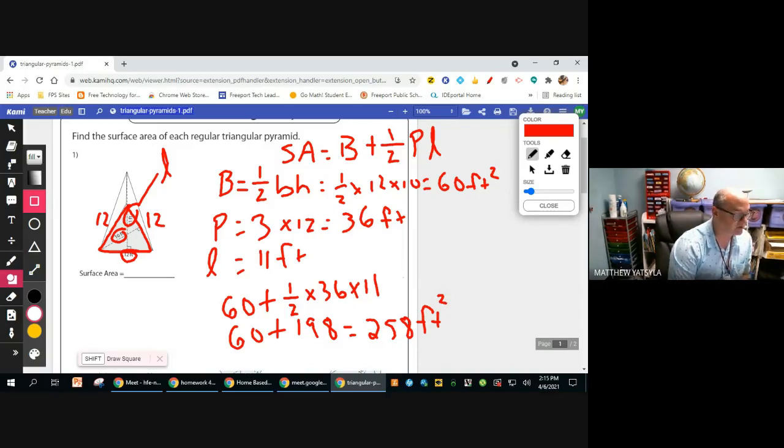So again, the only difference between a square and a triangular pyramid is how we're going to find the perimeter, multiplying it by three instead of four, and how we're going to do our base. So instead of just doing base times height, we're going to do one-half base times height for the triangle.